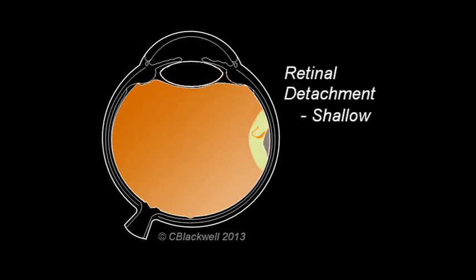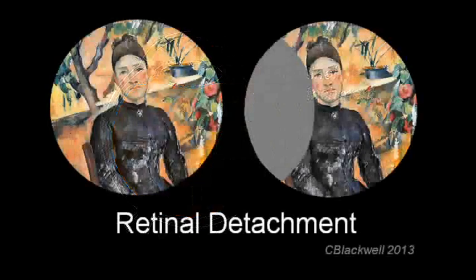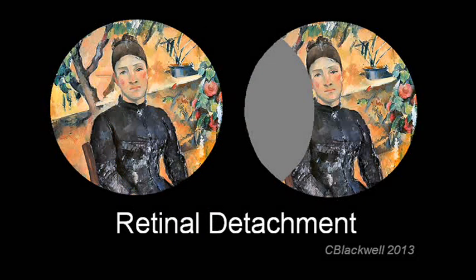The process leading to a retinal detachment begins with a retinal tear, which is followed by a small detachment that progressively increases in size. As the retina detaches from the wall of the eye, it loses function and you lose part of your vision.